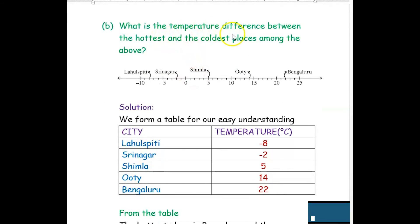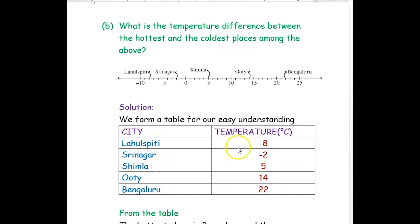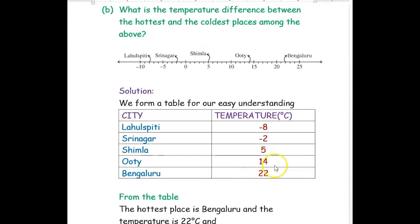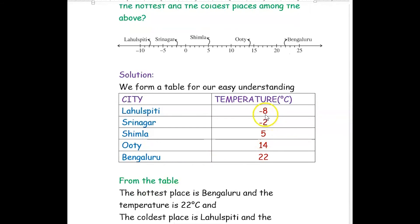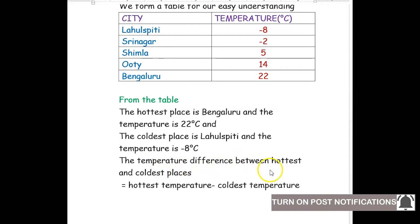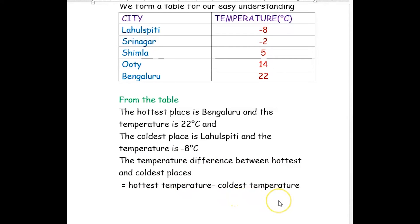The next question asks: what is the temperature difference between the hottest and the coldest places among the above? For easy understanding, we can form a table with city names and temperatures: Lahulspithi is negative 8°C, Srinagar is negative 2°C, Shimla is 5°C, Ooty is 14°C, and Bengaluru is 22°C. The hottest place is Bengaluru at 22°C and the coldest is Lahulspithi at negative 8°C. We want to find: hottest temperature minus coldest temperature.